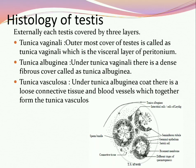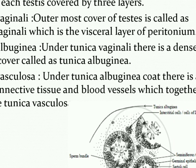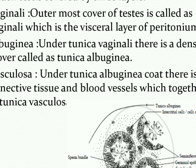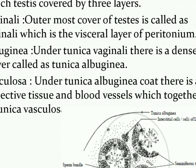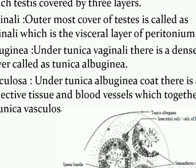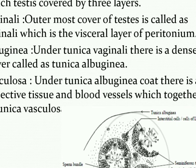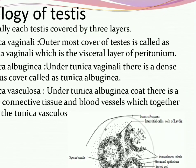Externally, each testis is covered by three layers: tunica vaginalis, tunica albuginea, and tunica vasculosa. The tunica vaginalis is the outermost cover, lined by the visceral layer of peritoneum. The second layer is the tunica albuginea, a dense fibrous cover. The innermost layer is the tunica vasculosa, present below the tunica albuginea, consisting of connective tissue and blood vessels.